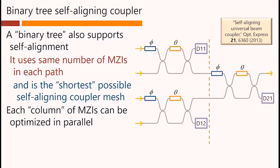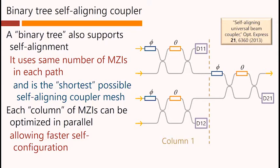Now, each column of the Mach-Zehnders can also be optimized in parallel, allowing faster self-configuration. So, both of the Mach-Zehnders in this column one could undergo optimization on minimization at the same time. And then we could proceed to the next column. And this continues to work as we make more complex sets of binary tree meshes.